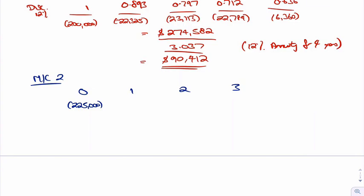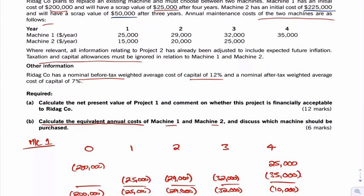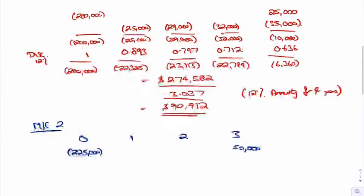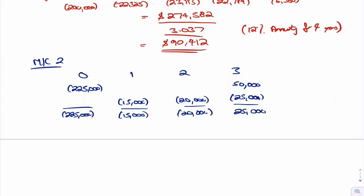Then we just need to put in these maintenance costs, 15, 20 and 25. So 15,000, 20,000 and 25,000. Then we add them down because there's no tax or anything. So 225,000, 15,000, 20,000 and positive 25,000.